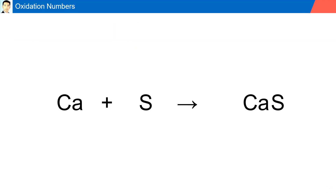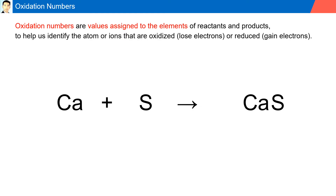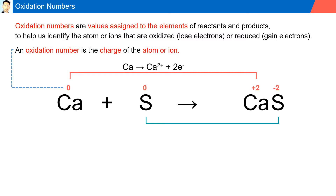Oxidation numbers are values assigned to elements of reactants and products to help us identify the atom or ions that are oxidized (losing electrons) or reduced (gaining electrons). The oxidation number is the charge of the atom or ion. For example, calcium has an oxidation number of zero; it loses two electrons to become plus two, its oxidation number in a compound CaS is plus two, while sulfur in its free state has oxidation number of zero and loses two electrons to have an oxidation number of minus two.